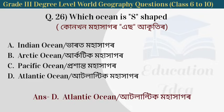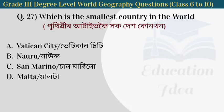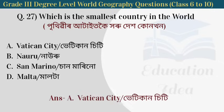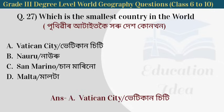Next question: which is the smallest country in the world? The answer is Vatican City — Vatican City is the smallest country in the world.